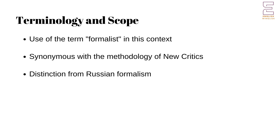The term Formalist is used in this context to describe the methodology of the New Critics, distinguishing it from other forms of Formalism, such as Russian Formalism. While there are similarities between these methodologies, the focus here is on the specific practices and principles of the New Critics. Russian Formalism, for instance, also emphasized the form and structure of literary texts, but was more concerned with the linguistic and semiotic aspects of literature. In contrast, the New Critics focused on the unity and coherence of the text, its themes and the interplay of its formal elements.